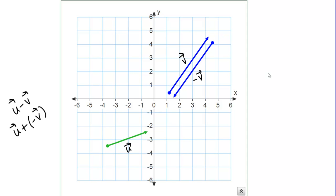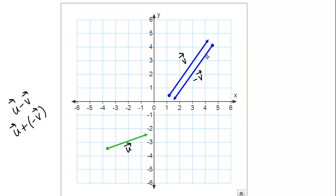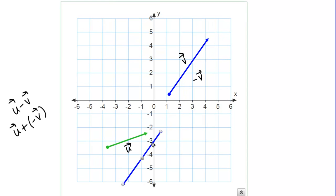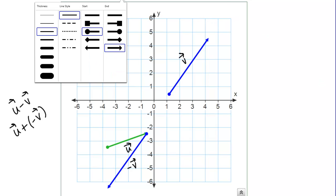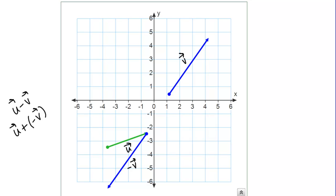Now all we have to do is just add U and negative V. We can do that using the same method that we just learned. I'm going to use the triangle method, though in theory you could use either the triangle or parallelogram method. I'm going to take negative V here and put the tail of negative V at the head of U like this. Then to draw U minus V or U plus negative V, we simply just connect this triangle. That will end up looking like this. That's our vector U minus V.